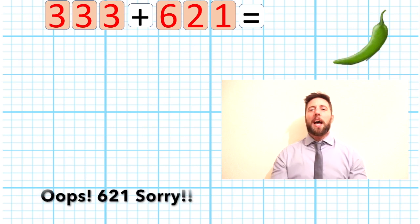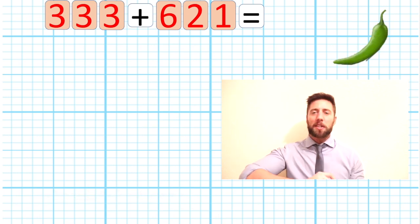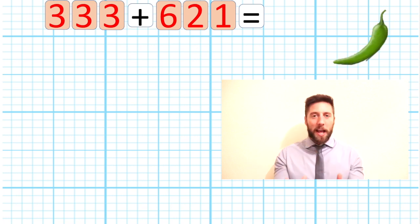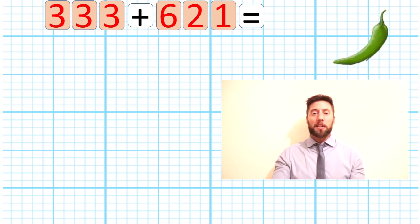With that in mind, let's move on. Our first question: 333 and 621. Now we are going to be perfect mathematicians today and we're going to set our work out beautifully to avoid making any small mistakes.